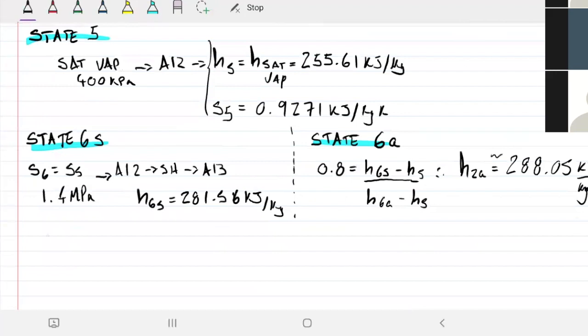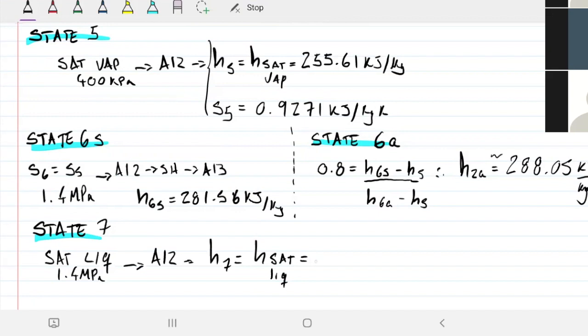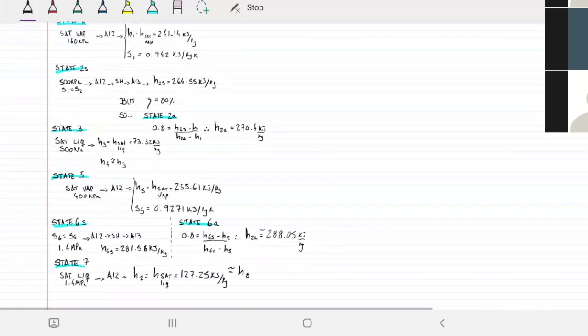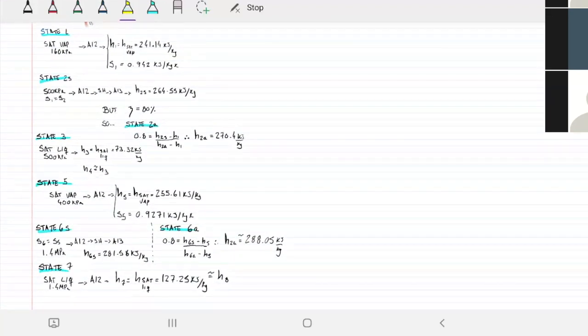Finish off state seven, state eight are the same in enthalpy, so you just need to find state seven, state eight will be done. And state seven is a saturated liquid and it's also at 1.4 MPa, that's easy. Table A-12, h7 = 127.25 kJ/kg, which is also equal to h8. So we have enthalpy for one, enthalpy for two, enthalpy for three and four, enthalpy for five, enthalpy for six, and enthalpy for seven and eight. If we find anything we throw our way.